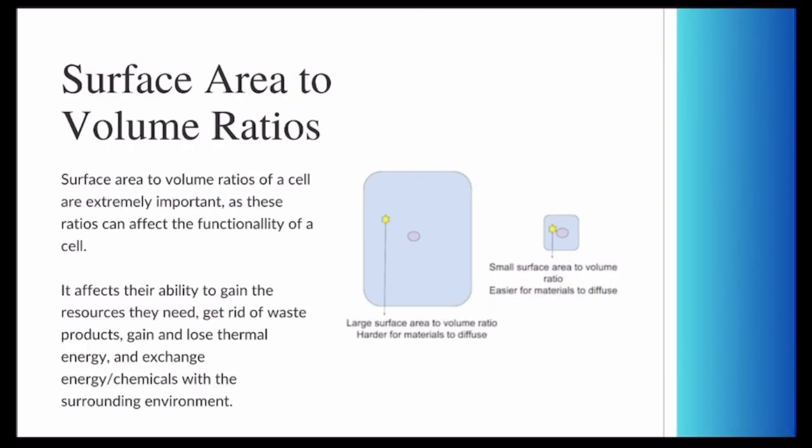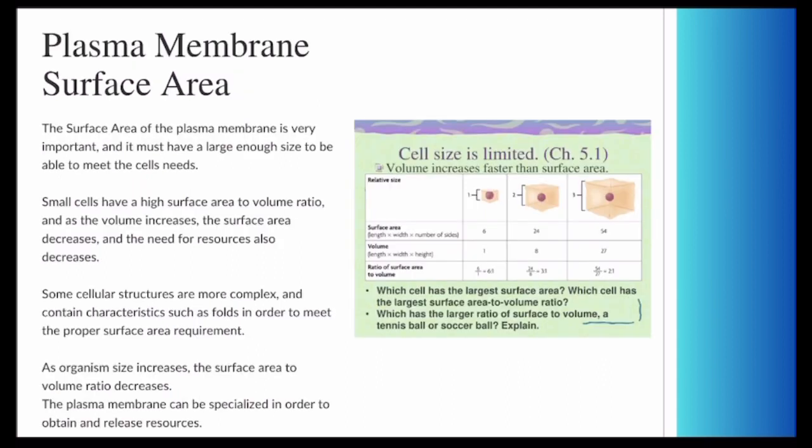Next, we're going to be going over cell size. Surface area to volume ratio within a cell is very important. It affects how they can get rid of waste products, how they gain and lose thermal energy, and how they exchange energy and chemicals with the surrounding environment. Small cells have a high surface area to volume ratio. As the volume increases, the surface area decreases, and as organism size increases, the surface area to volume ratio decreases.